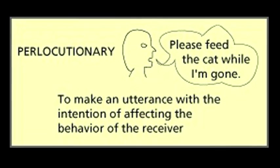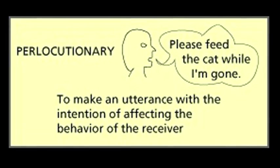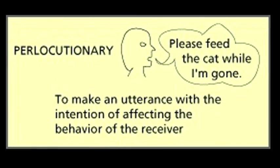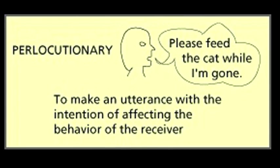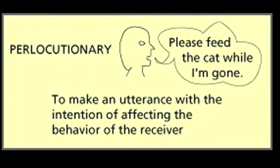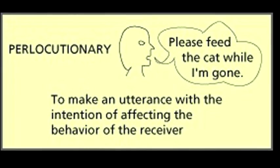Austin's fourth key term is perlocutionary utterance, which means to speak with the intention of affecting the behavior of the receiver. Thus this utterance is explicitly tied up in speaking to another person and seeking to influence them. For example, take a look at this sermon — an explicitly perlocutionary genre.